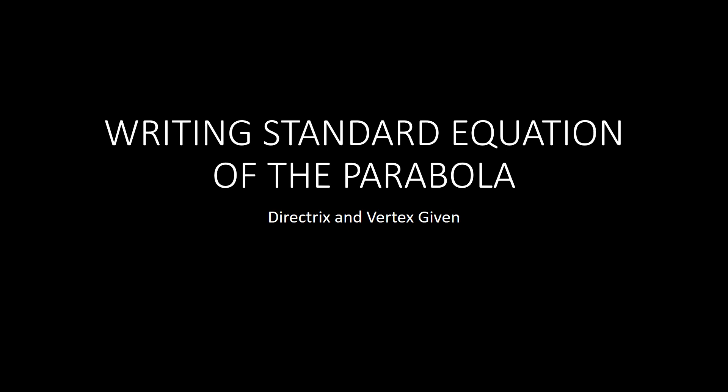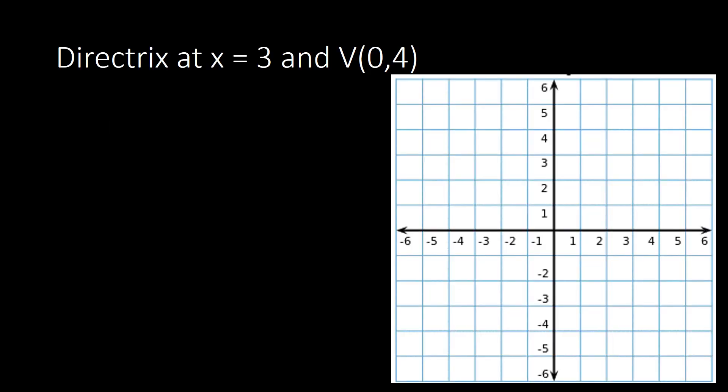Writing the standard equation of a parabola with a given directrix and vertex. In this example, we have the directrix at x equal to 3 and the vertex at (0, 4). All we have to do is graph or plot those parts of the parabola in a Cartesian plane.